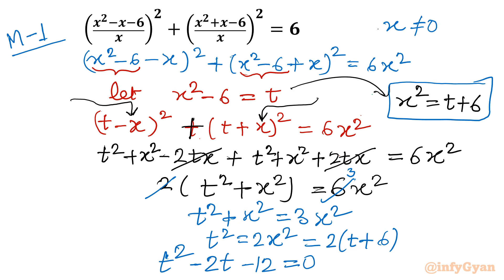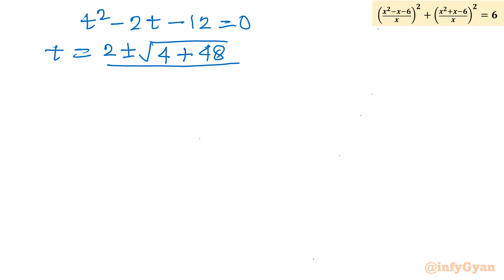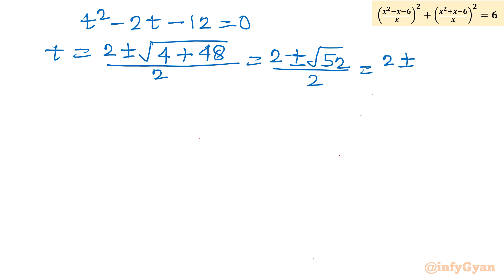Let us solve this quadratic equation. Applying the quadratic formula (Shridharacharya formula): t = [2 ± √(4 + 48)] / 2 = [2 ± √52] / 2. Simplifying, t = 1 ± √13.